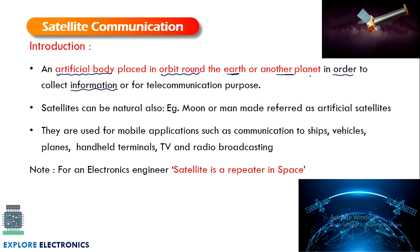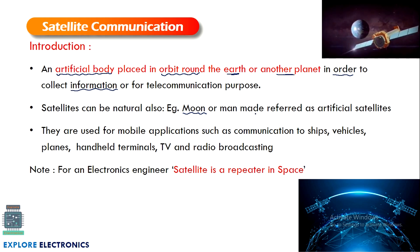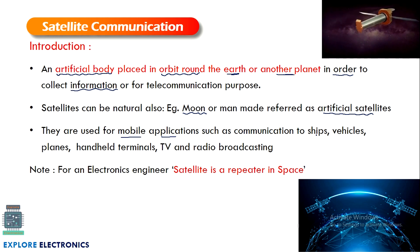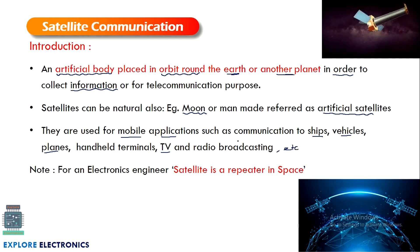Satellites can be natural or artificial. As we know, the moon is a natural satellite, and man-made satellites are called artificial satellites. These artificial satellites are used for mobile applications such as communication to ships, vehicles, planes, handheld terminals, TV and radio broadcasting, and more. These are the different applications for which we use satellite communication.